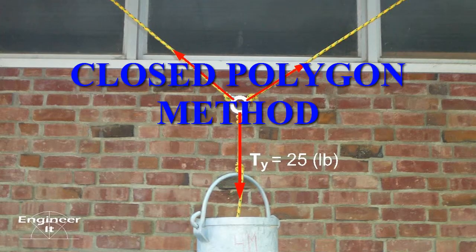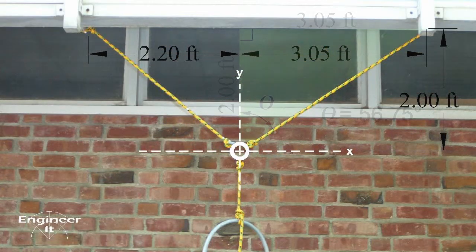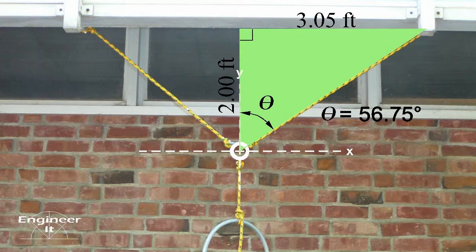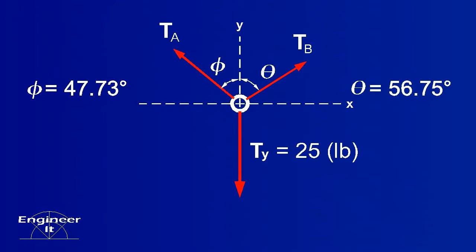The second method is an extension of the parallelogram method that creates a closed vector polygon reflecting the force equilibrium. The method uses trigonometry as well to find the directions of each vector as shown in the trig method. Then, using the principles of the parallelogram method, the vectors are realigned to form a closed polygon.